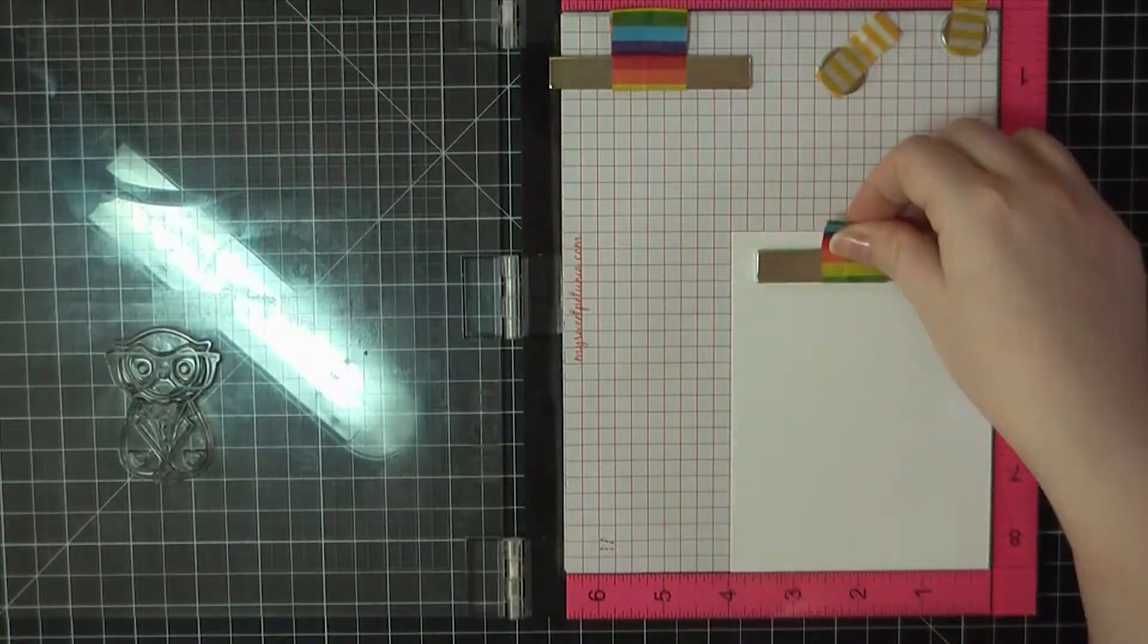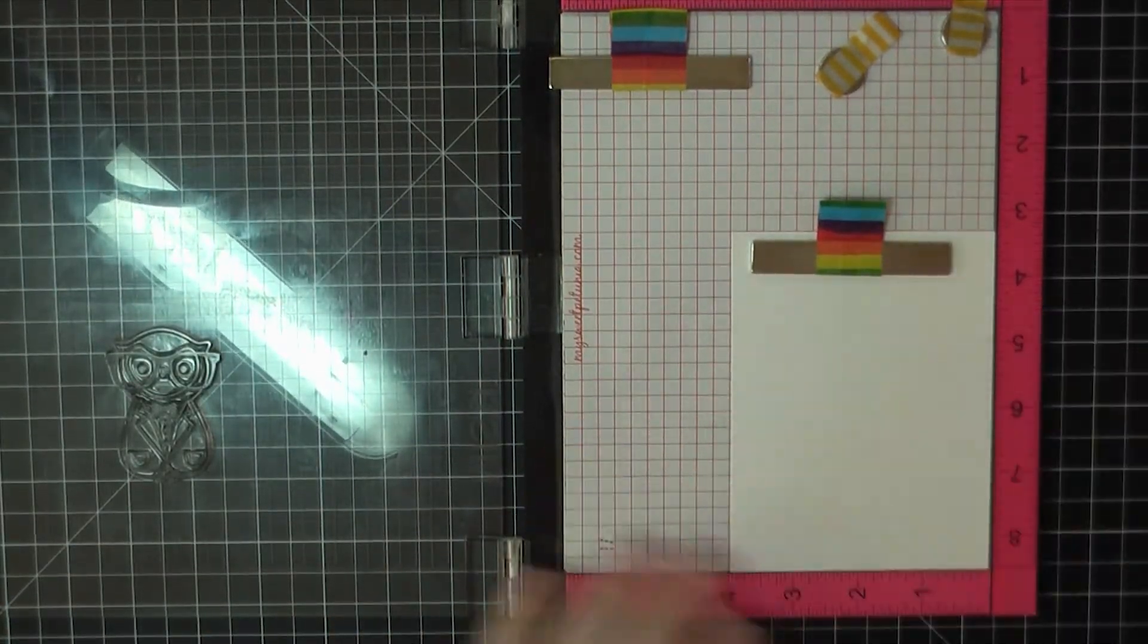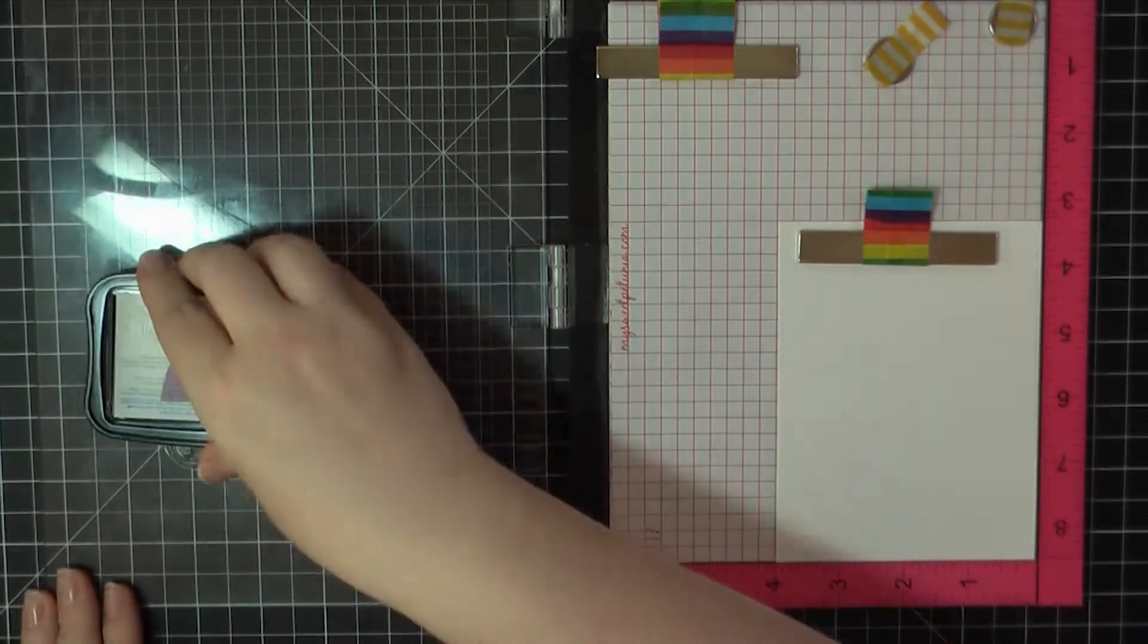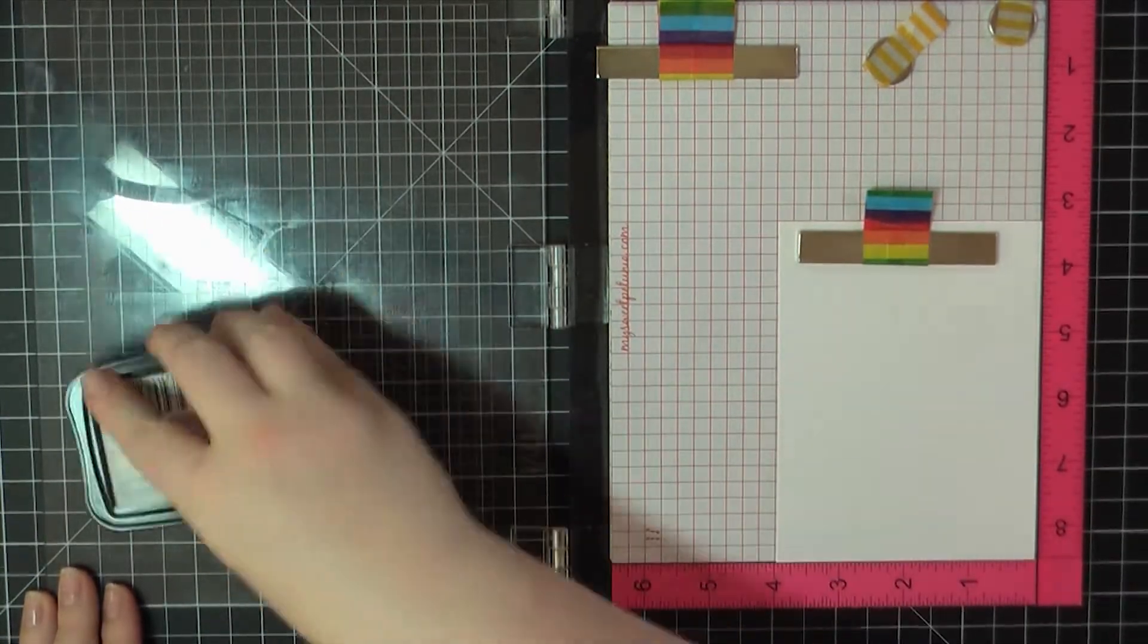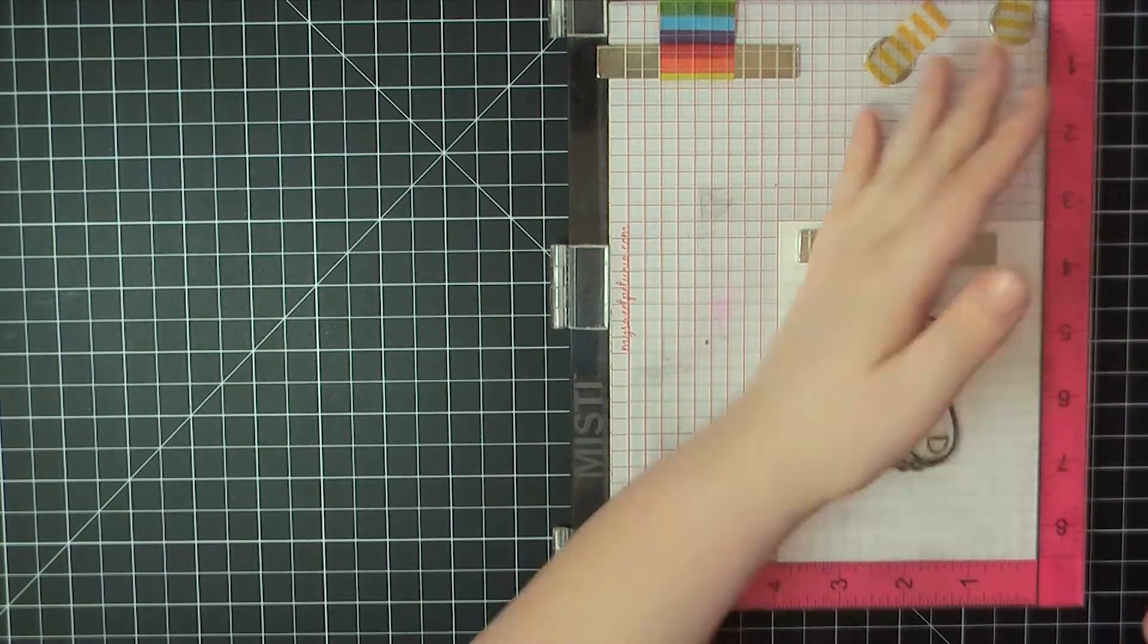So here I have trimmed down some Neenah Solar White cardstock to 4 by 5 and a quarter and I'm going to stamp that using Memento Tuxedo Black ink. I'm going to do some Copic coloring today.